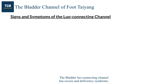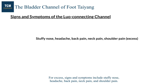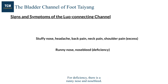The bladder luo connecting channel has excess and deficiency syndromes. For excess, signs and symptoms include stuffy nose, headache, back pain, neck pain, and shoulder pain. For deficiency, there is a runny nose and nosebleed.